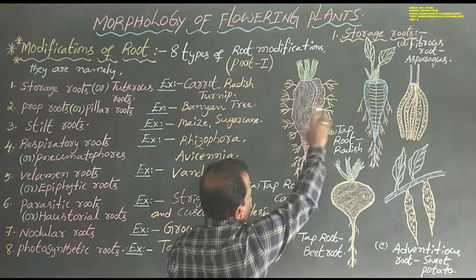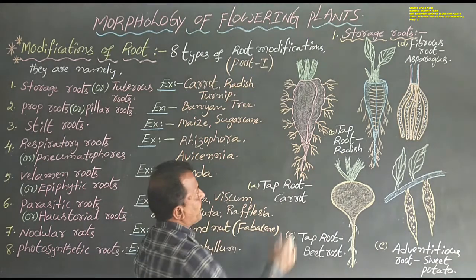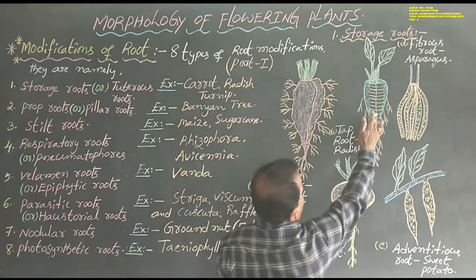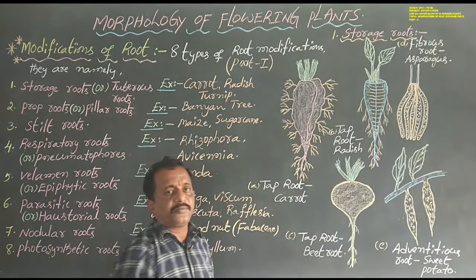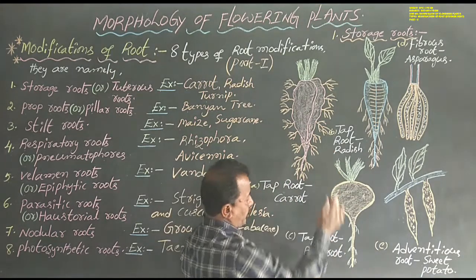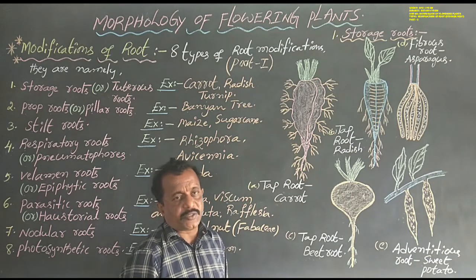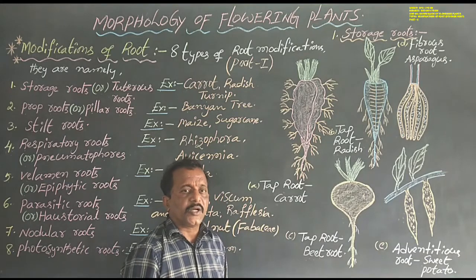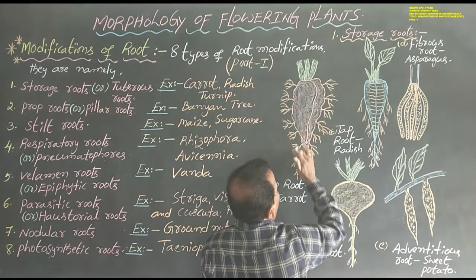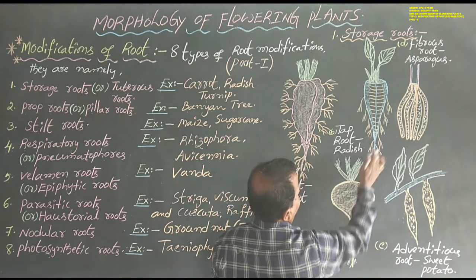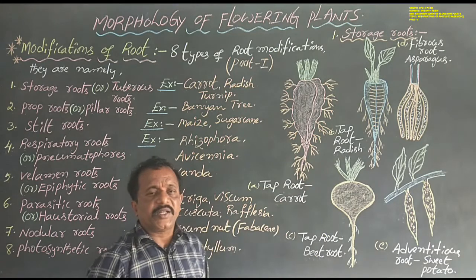Let us discuss tap root systems — carrot, radish, and beetroot. These plants have a tap root system. The tap root system consists of a primary root surrounded by lateral roots — that is secondary and tertiary roots. In majority of dicot plants, the radical elongates directly into the soil, developing into the primary root, which then branches into secondary and tertiary roots, constituting the tap root system.